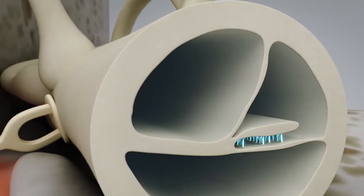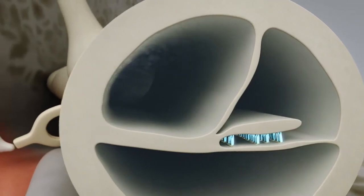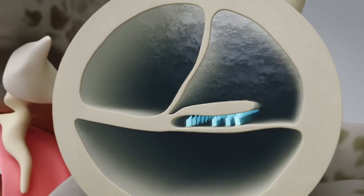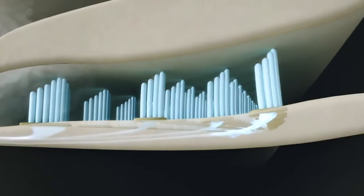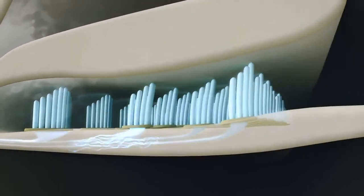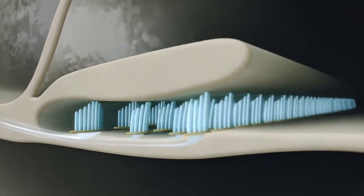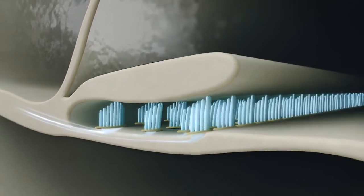When the sound waves vibrate the oval window, the fluid begins to move, thus setting minute hair cells in motion. These hair cells then transform the vibrations into electrical impulses, which are sent via the auditory nerve and onto the brain.